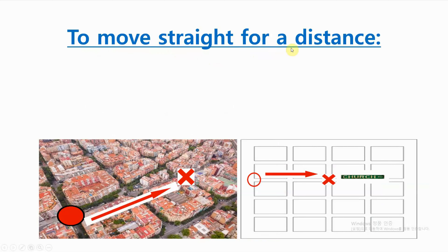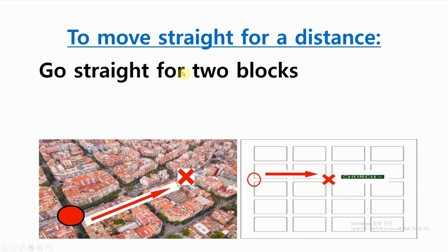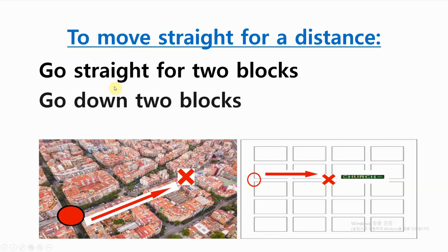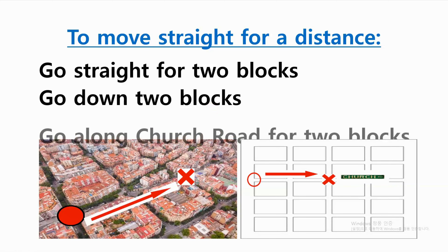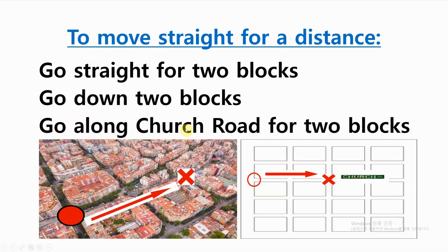To move straight for a distance, we can give this detail: go straight for two blocks. Go down two blocks. And with extra detail: go along Church Road for two blocks.